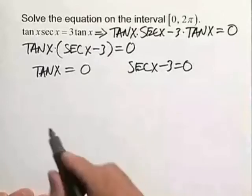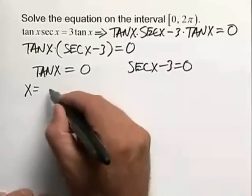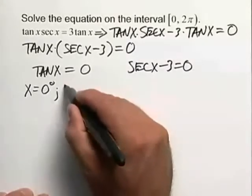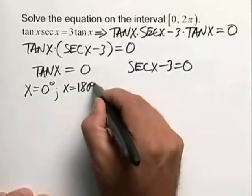Now the tangent of x equals 0, we know this to occur when x is equal to 0 degrees and also when x is equal to 180 degrees.